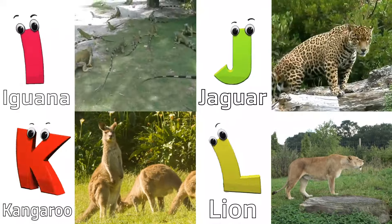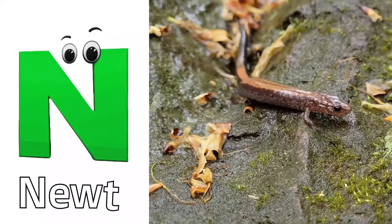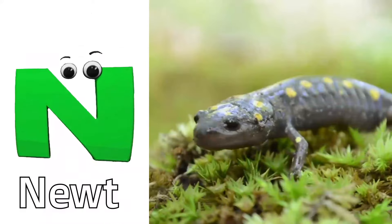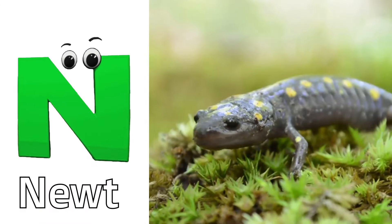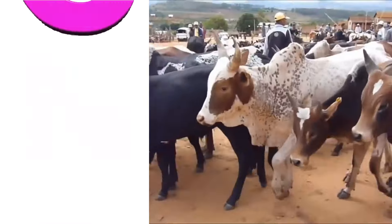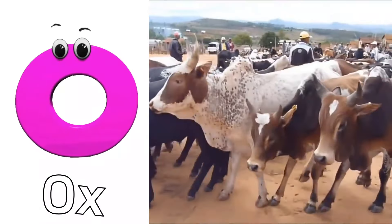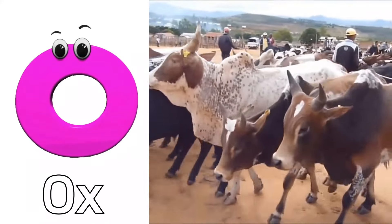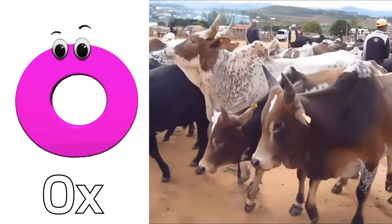M is for Monkey. M, M, Monkey. N is for Newt. N, N, Newt. O is for Ox. O, O, Ox.